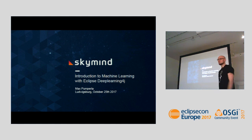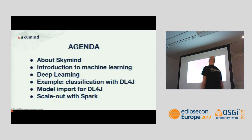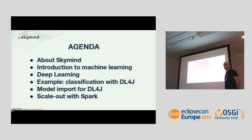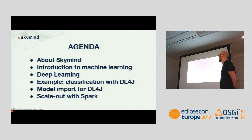Thanks for having me. My name is Max Perpeller, I'm a deep learning engineer with SkyMind. Today I'm going to talk about machine learning and deep learning with Deep Learning for J. What we'll cover is: a quick intro to SkyMind, an introduction to machine learning compared to traditional programming, deep learning at a high level, an example of how to build and run a neural network with DL4J, and two special topics — Keras model import and scaling with Apache Spark.